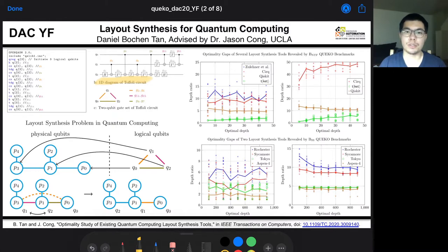Hi, my name is Daniel Bochen Tan, and I'm a CIS PhD student at UCLA, advised by Dr. Jason Kong. I'm honored to present our work on layout synthesis for quantum computing as part of the booster session for Yang Fellow Program at Design Automation Conference 2020.